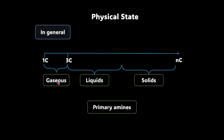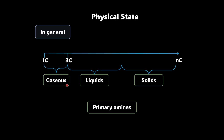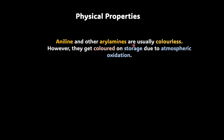If we talk about these lower gaseous aliphatic amines, they usually have a fishy odor. If we talk about the color, the aromatic amines like aniline and aryl amines are usually colorless. However, they get colored on storage due to atmospheric oxidation.